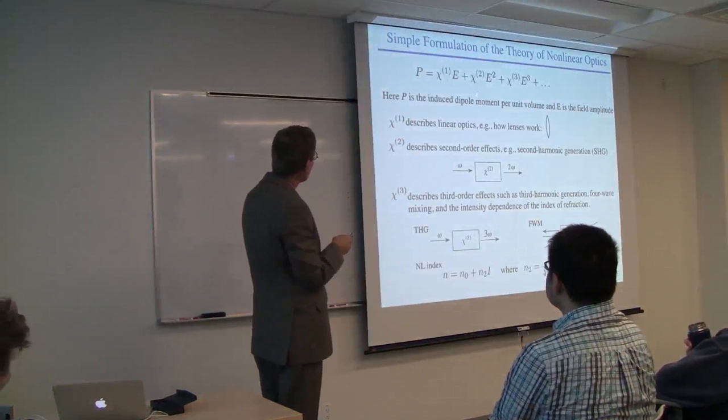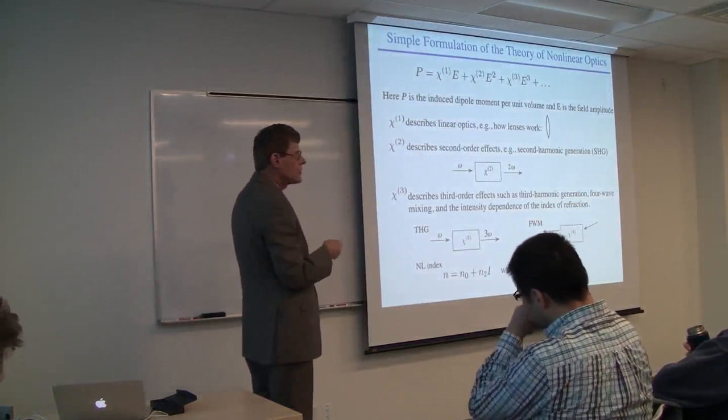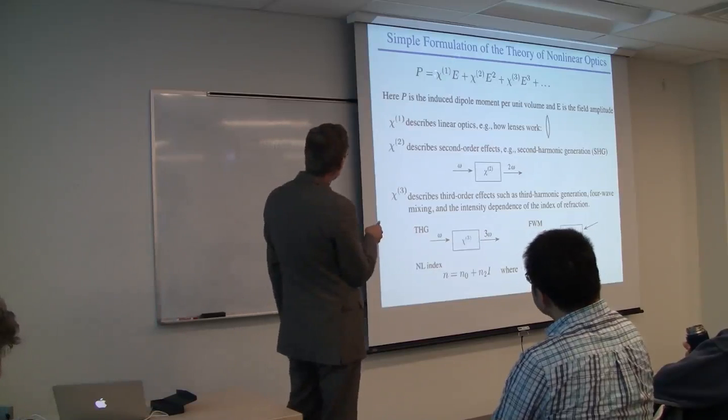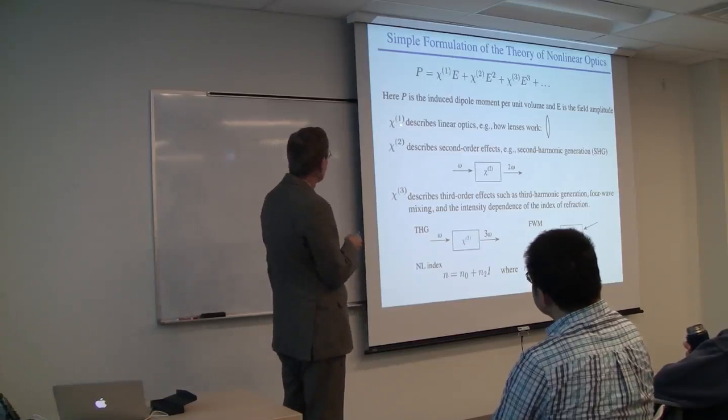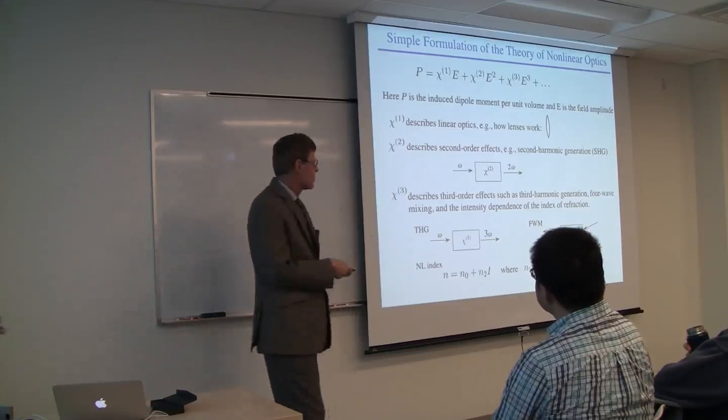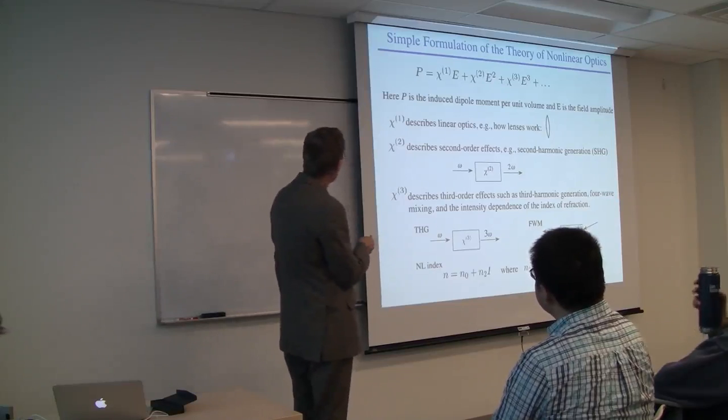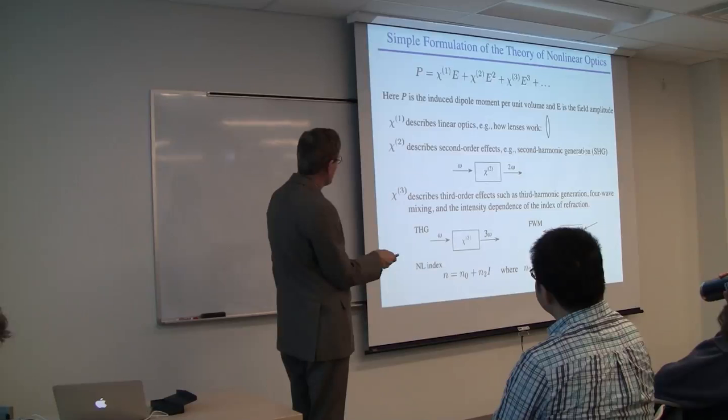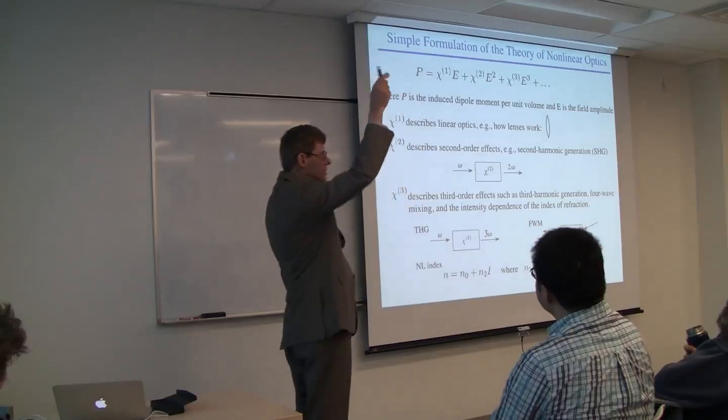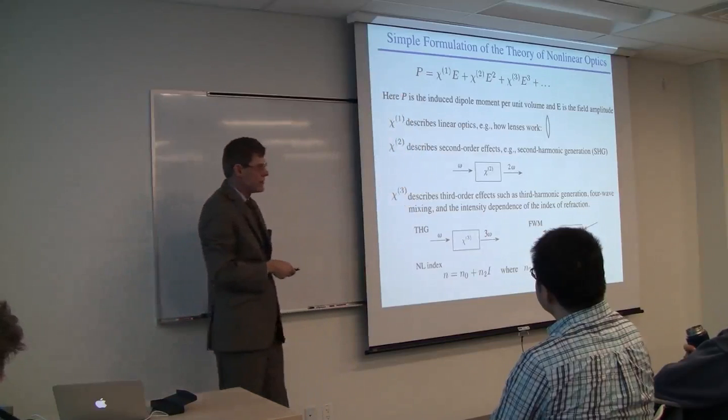Each term in this power series expansion has a well-defined interpretation. The first term Chi-1 times E describes linear optics. The second term Chi-2 describes second order effects such as second harmonic generation. A laser beam at frequency omega goes through a nonlinear crystal and comes out at double the frequency.